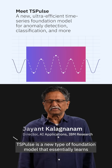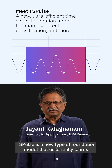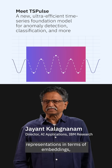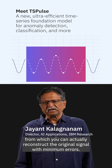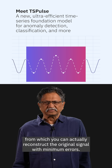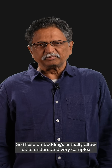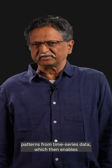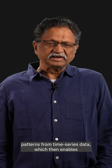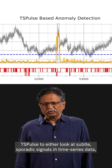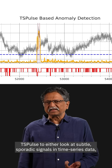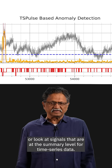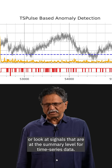TSPULSE is a new type of foundation model that essentially learns representations in terms of embeddings, from which you can actually reconstruct the original signal with minimum error. These embeddings allow us to understand very complex patterns from time series data, which then enables TSPULSE to either look at subtle sporadic signals or look at signals that are at the summary level for time series data.